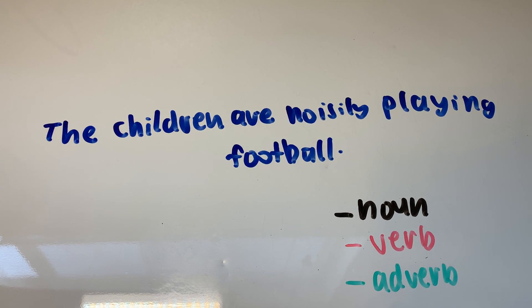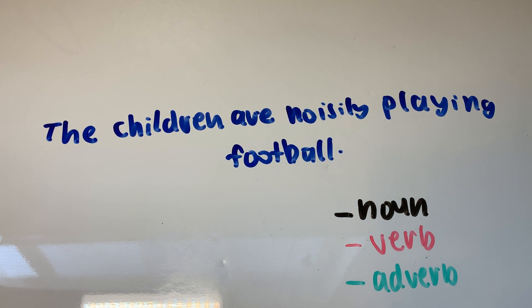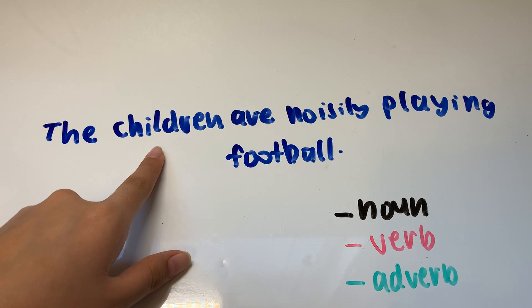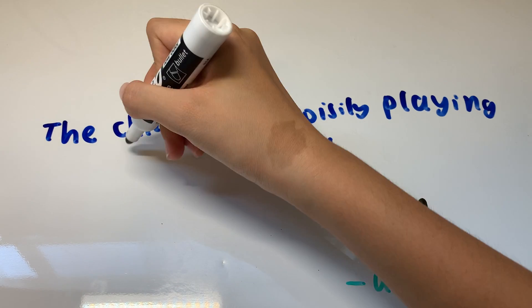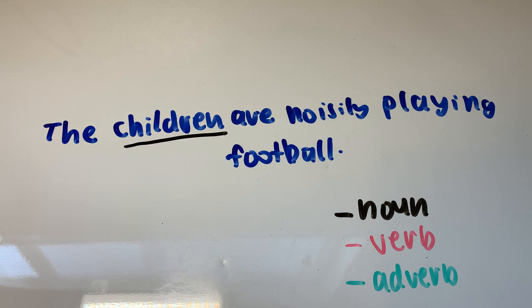And let's first identify the nouns. Person, place, or thing. Can we find anything that's a person, place, or a thing? Yes, we can. So the children are people, so that's a noun. And we'll underline it in black because it's a noun. And then what else is a person, place, or a thing? Football. Football is a thing, right? So underline football in black, which makes it a noun.